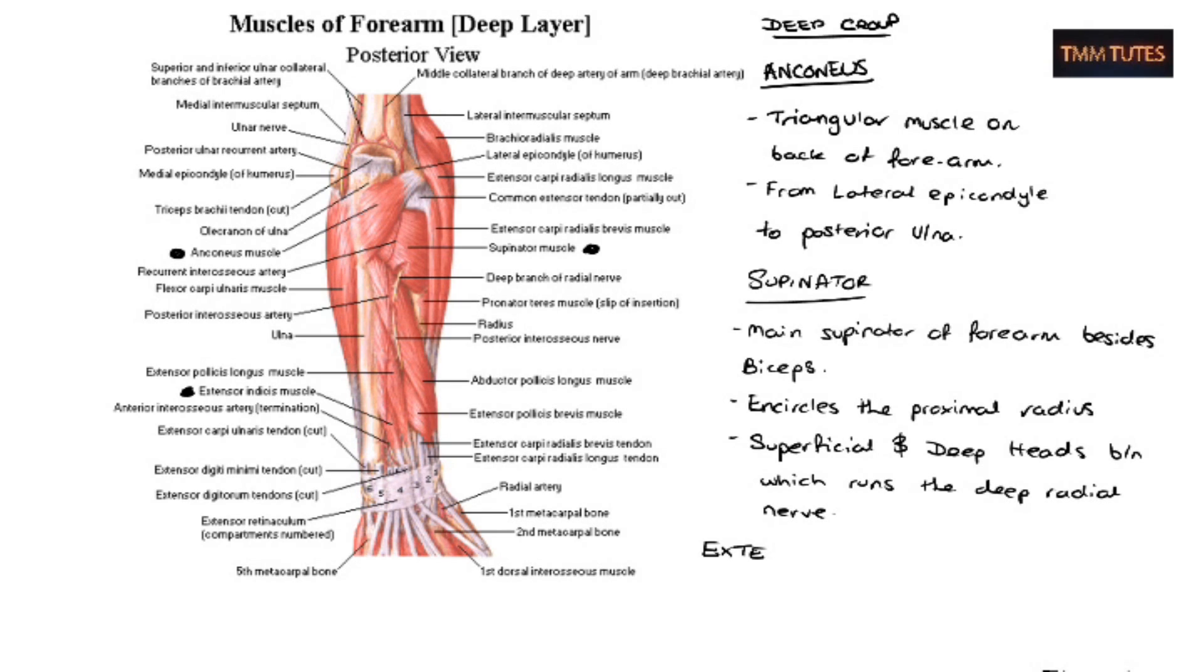So the last one is sort of a random one. It's extensor indices. It's a little small short belly muscle with a long tendon and it extends to the index finger. It's sort of rarely seen. Most diagrams won't have it and it's not particularly important, but I thought I'd add it in for completeness.